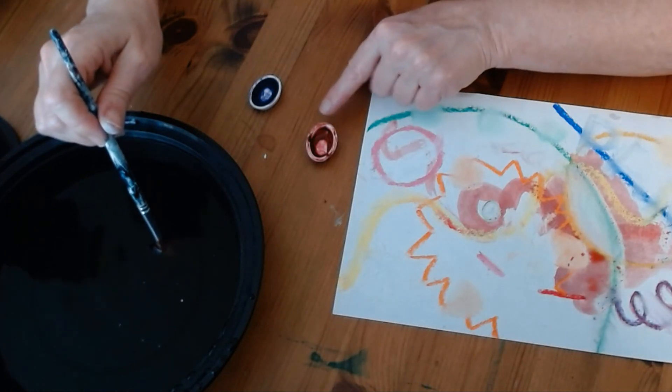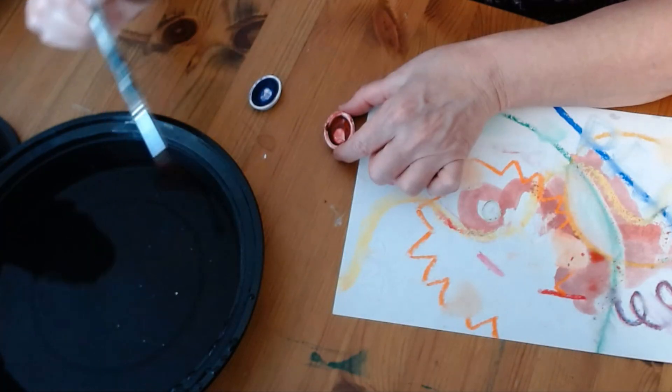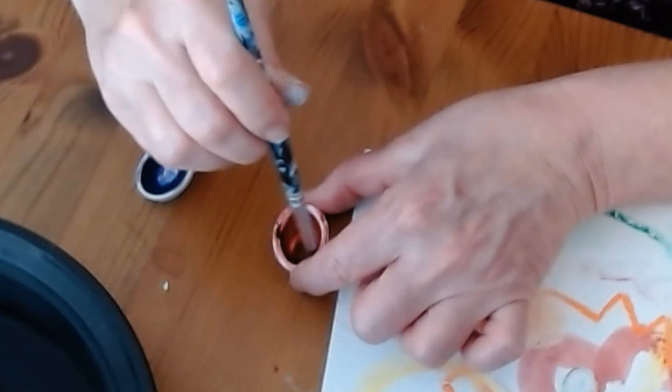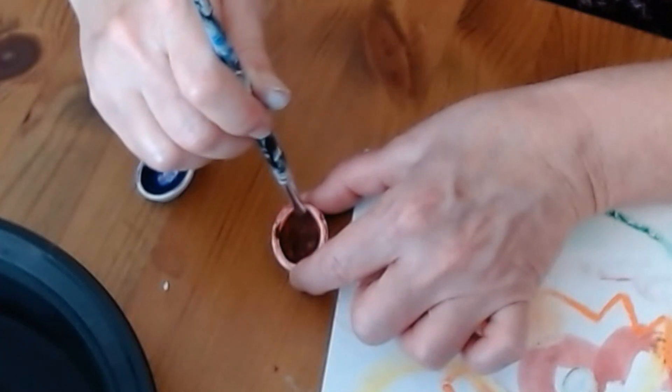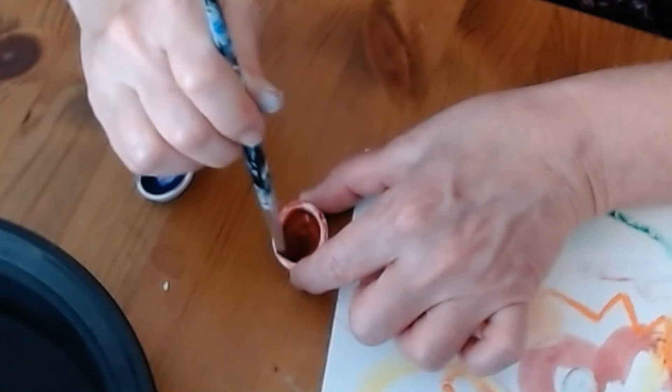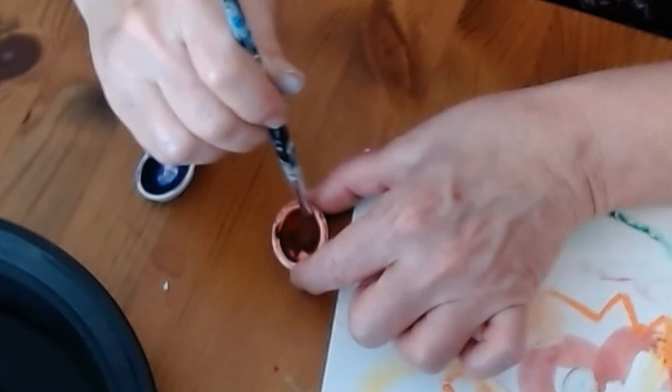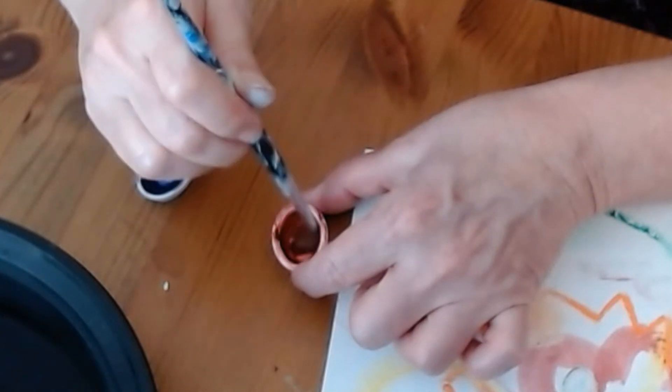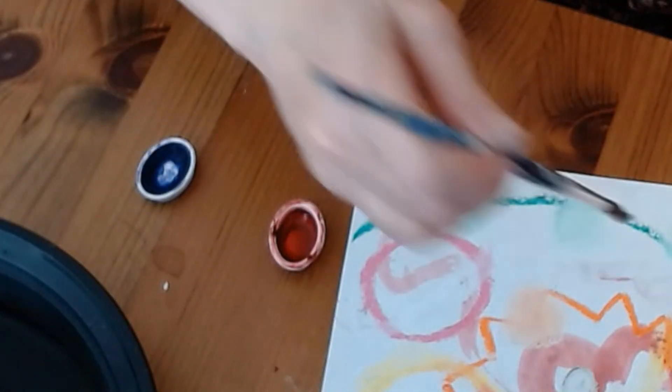I need a little more water in this paint container. So I'm gonna add a drop and gently press it out. Two drops. Now I'm going to rub it ten times. Two, three, four, five, six, seven, eight, nine, ten. The more you rub, the darker your watercolor will be.